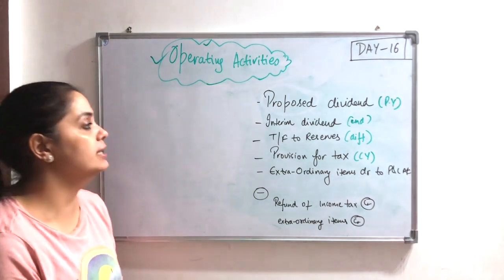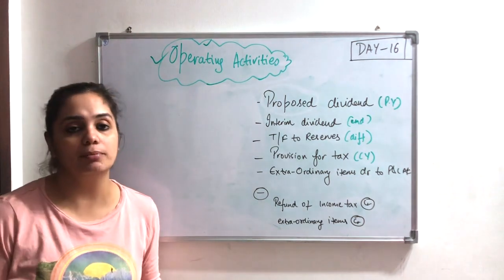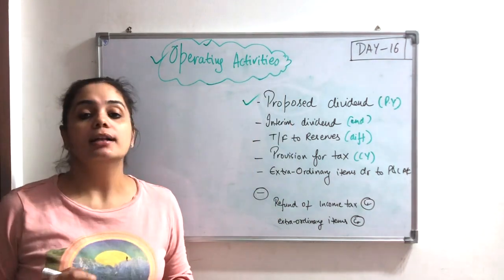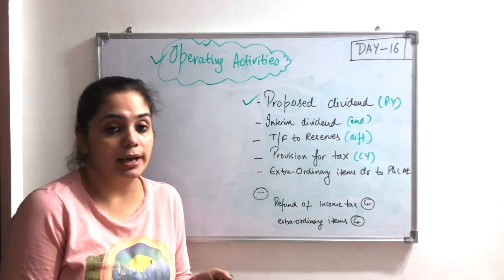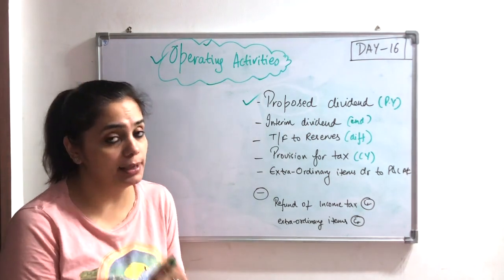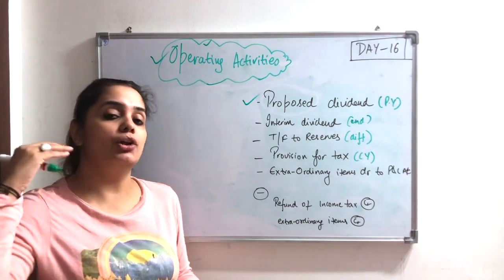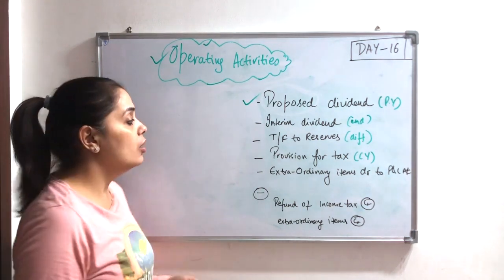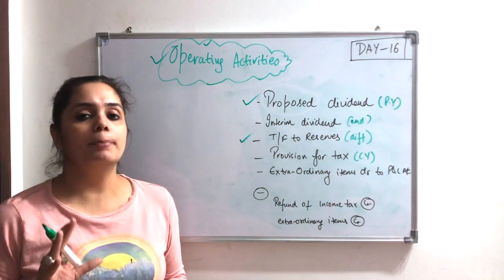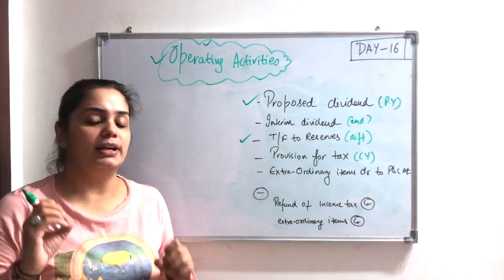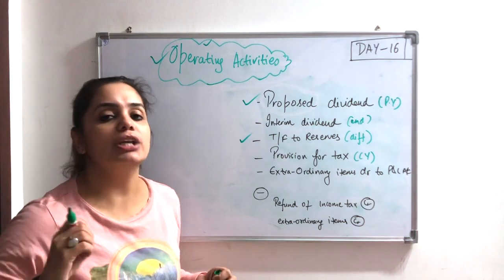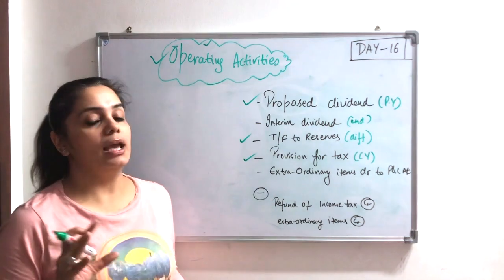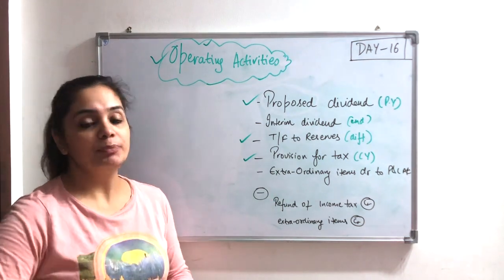The first thing is that if my company has a good profit, then I will propose a dividend. For example, my company has great profit this year, so I told my shareholders that I will give them this dividend next year. The other thing is transfer to reserves. For example, if my profit is 5,000,000, I created some reserves of 1,000,000. And then I created a provision for tax of 1,000,000.